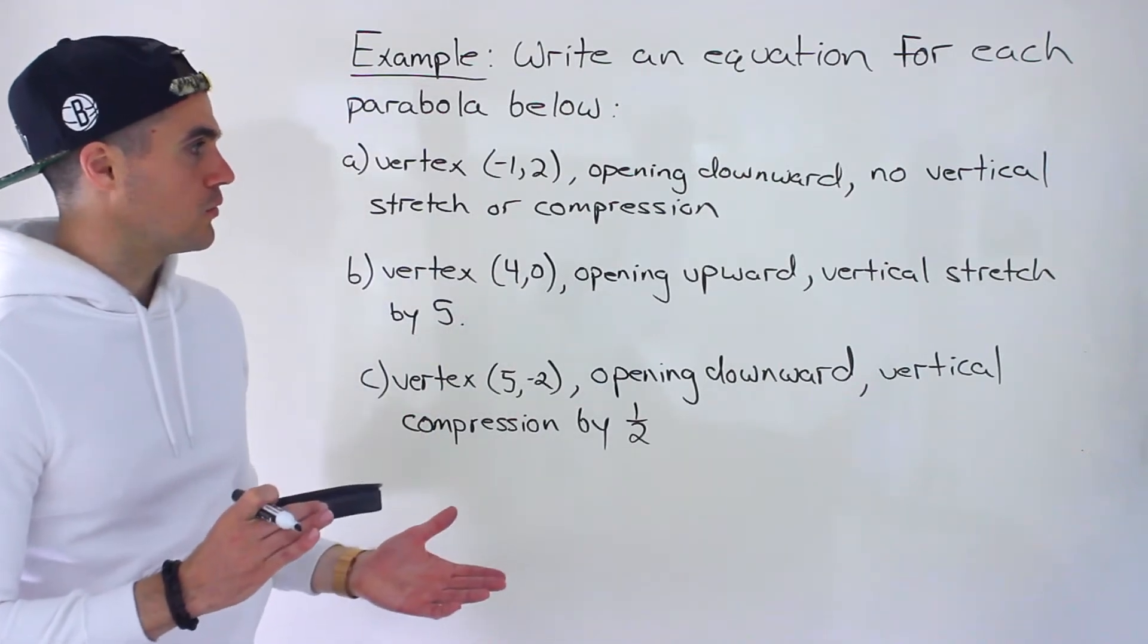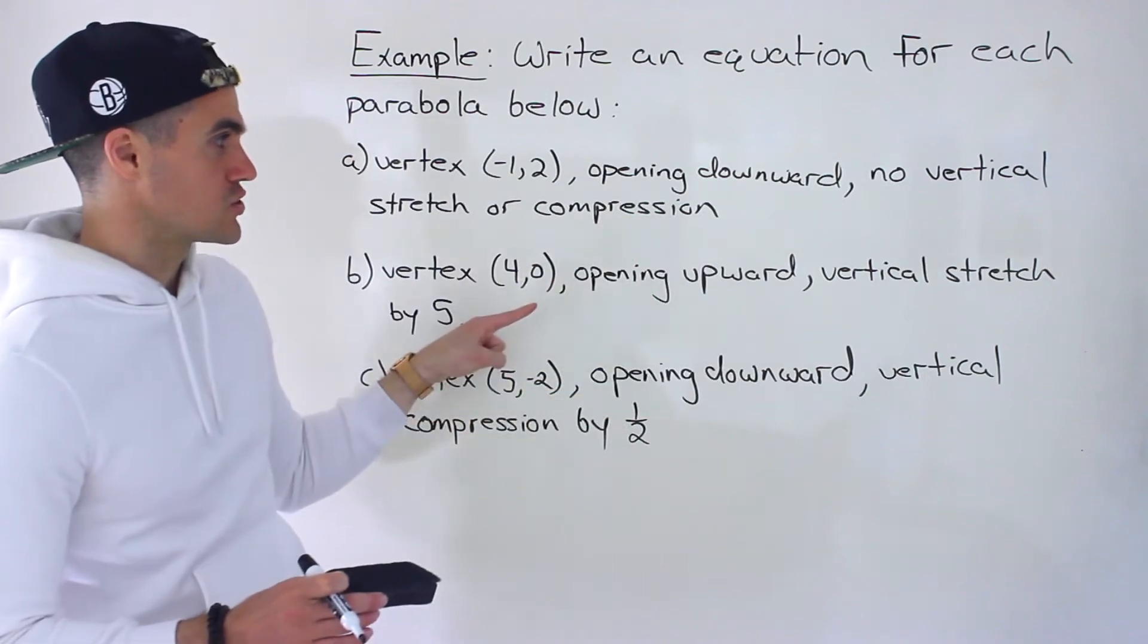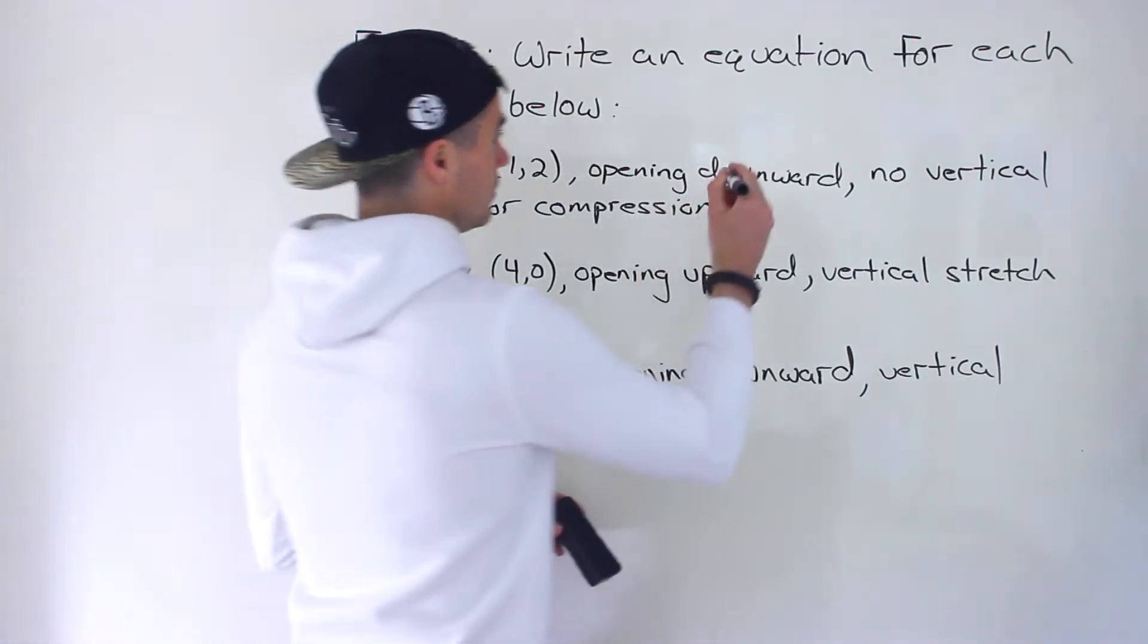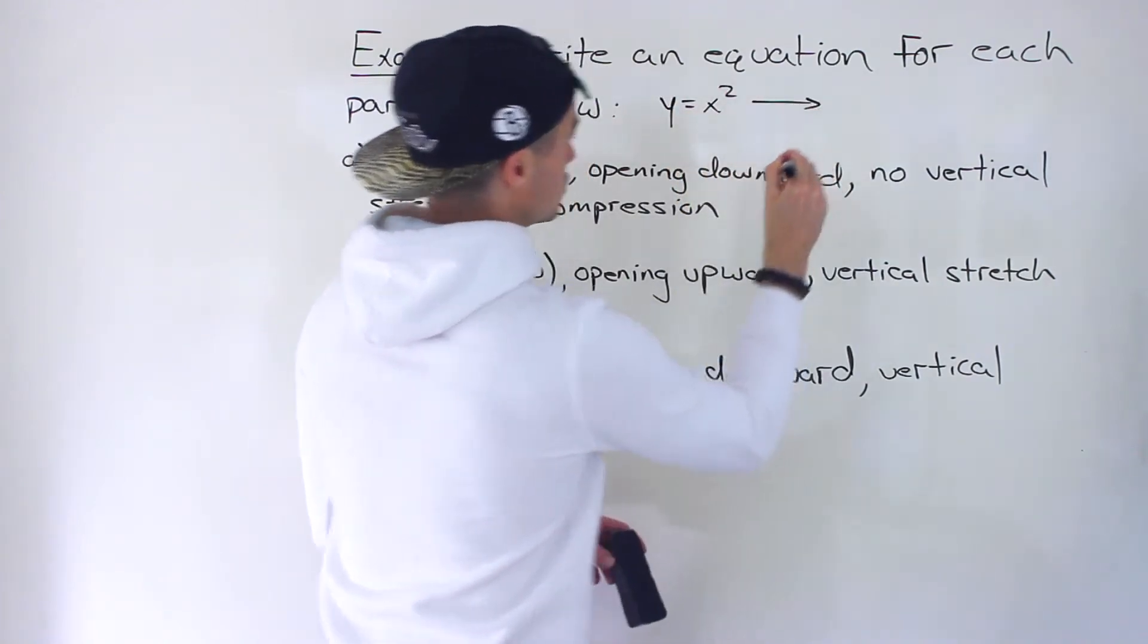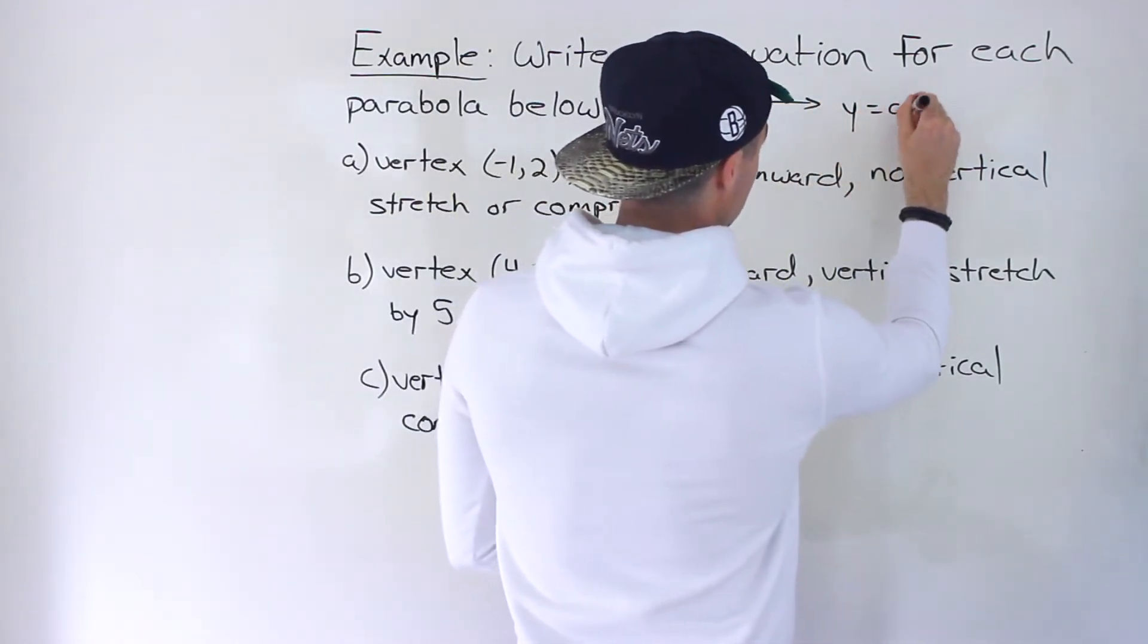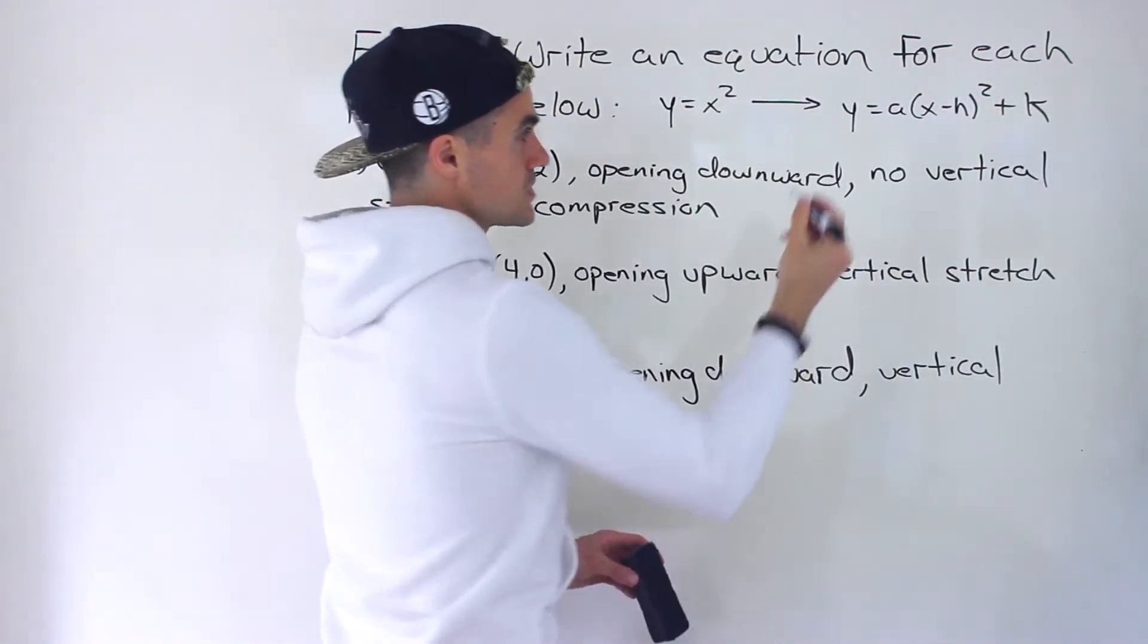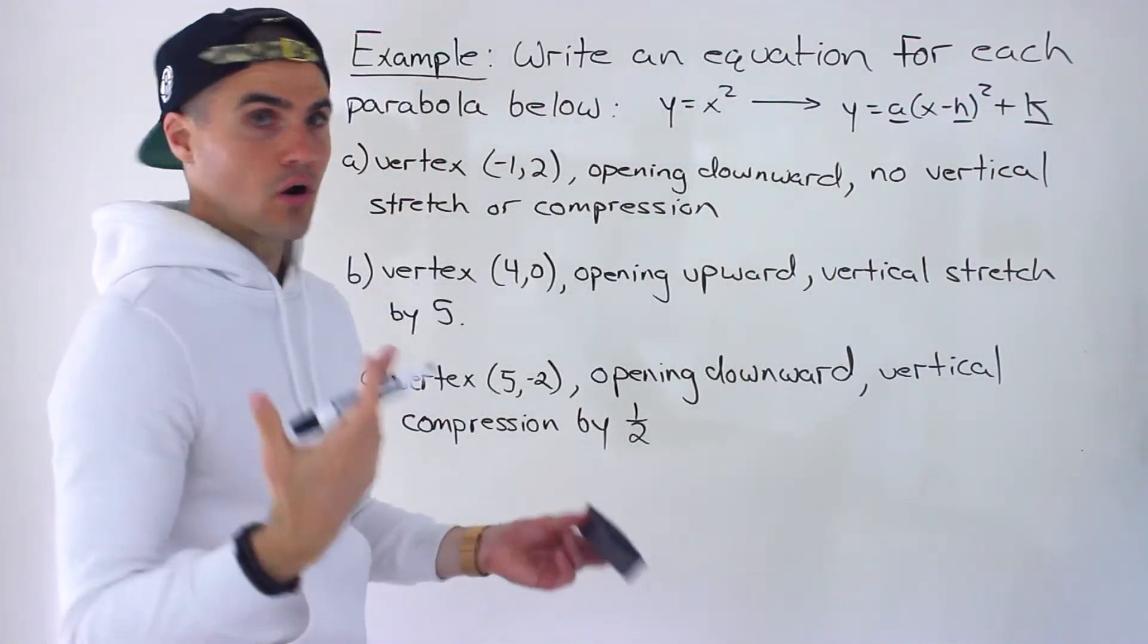So before what we were doing was we were given the equation and then describing some of these transformations. Now we are given the transformations and we have to make the equations. Transformations after you take x squared, that base function, and then transform it, what form is it going to take? It's going to be in that vertex form. So all of these are going to be in this format. If we can just get the A, the H, and then the K value for all of these, then we're all good.